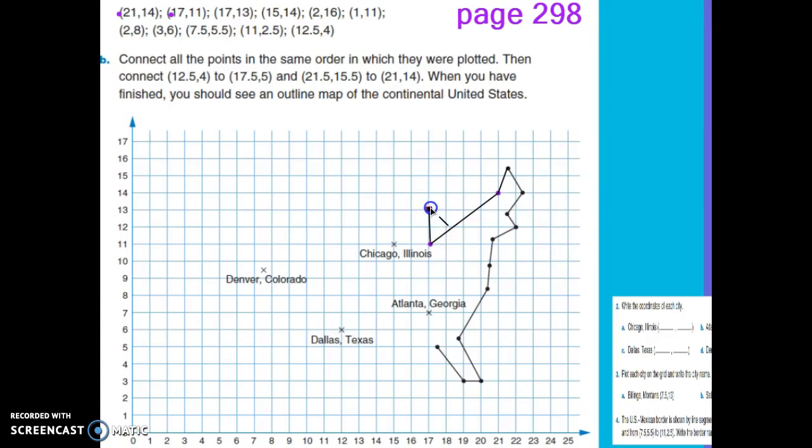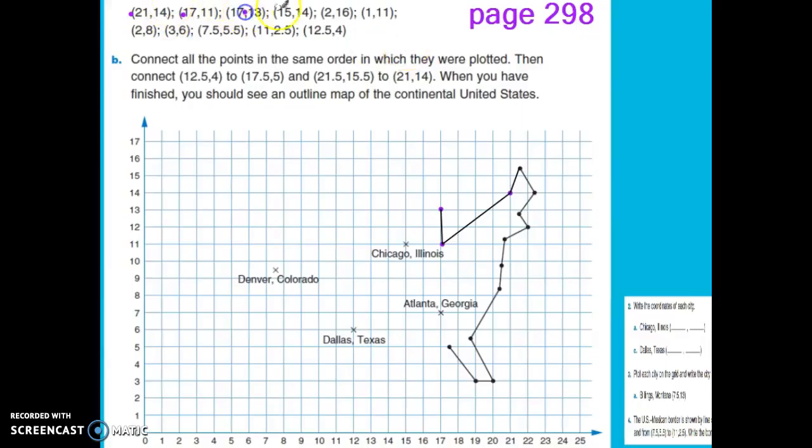Let's go back and continue with this. (15,14) is my next ordered pair, so I go over 15 on my x-axis, up 14 on the y-axis, and I plot my point. Just making sure I'm at 14 here—yep, connect my lines.